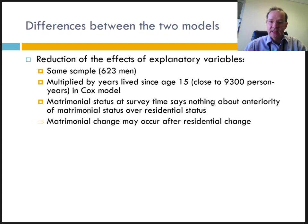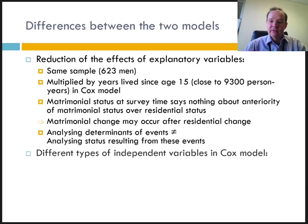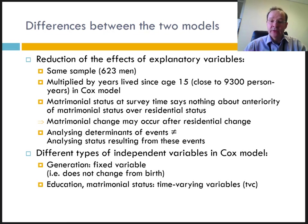Thus, analyzing the determinants of event is very different from analyzing the statuses resulting from these events. The independent variables, even if they appear with the same modalities in the two models, are of different nature. Generation is a fixed variable that is defined at birth, while the others are time-dependent variables in the Cox model. The level of education could have changed between the beginning of observation at age 15 and residential change. The same holds for marital status.